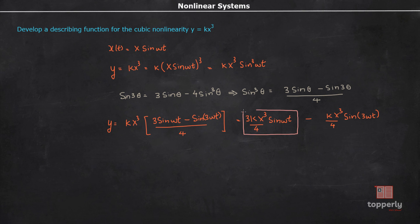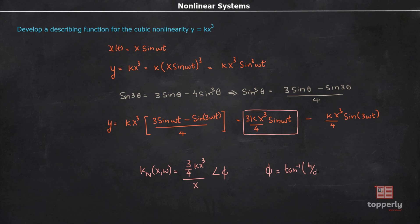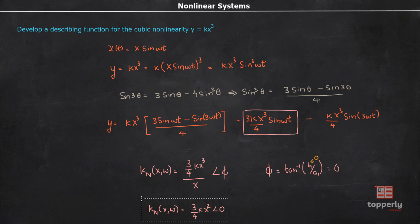From this equation we can see that the fundamental component is (3/4)kx³ sin(ωt), and its amplitude is (3/4)kx³. Therefore the describing function is: Kₙ(x, ω) = (3kx³/4) / x ∠φ. Since b₁ = 0 here, the angle φ = tan⁻¹(0) = 0. Therefore the describing function is Kₙ(x, ω) = (3/4)kx² ∠0. That's our answer for this example.